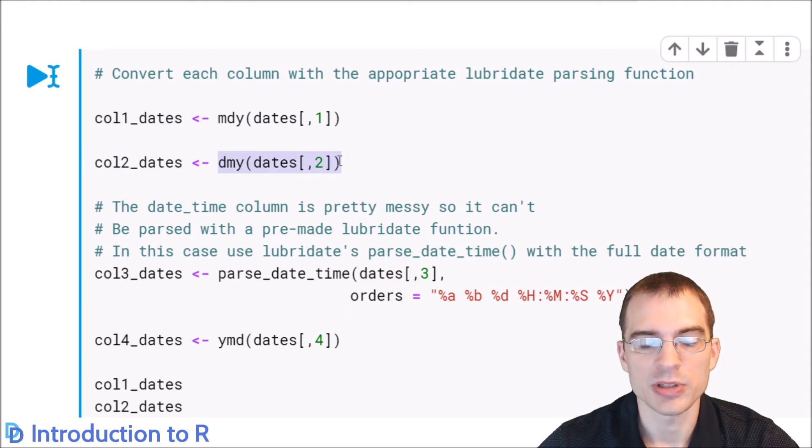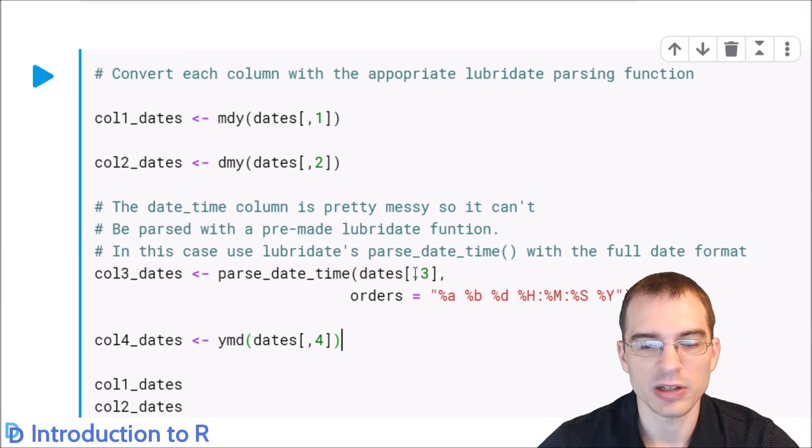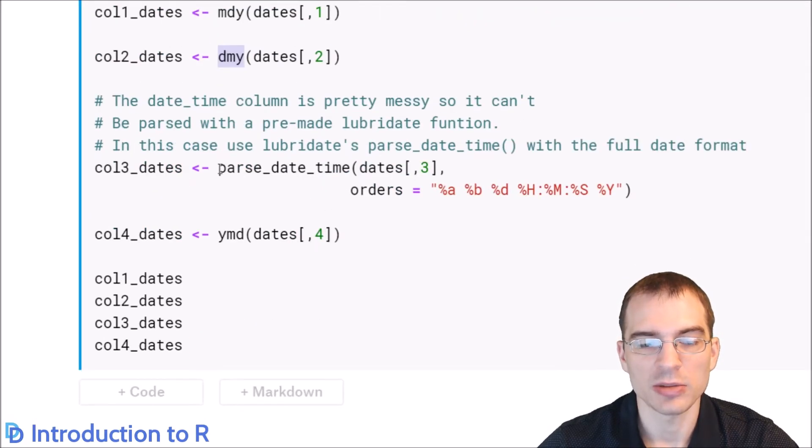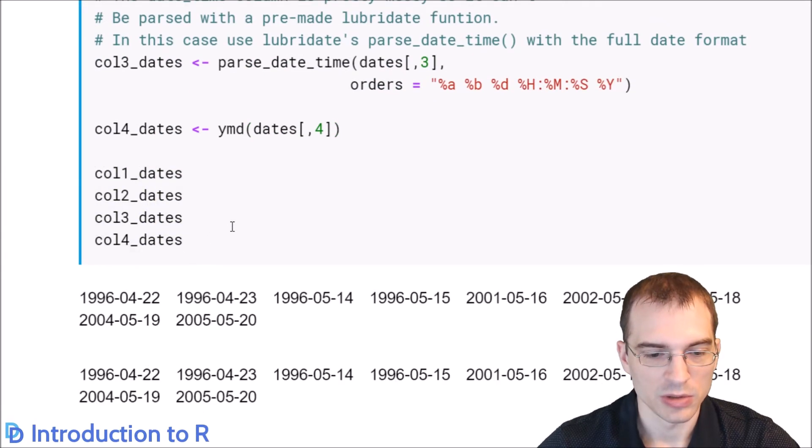For those first two columns in our data set, we can just use these built-in functions to do that conversion. Similarly, for the last column, we can call ymd to convert those that were in year, month, day format. Unfortunately, certain columns that have very complicated formats don't have a built-in function that will work for them. That third column that had a longer full date time format, we'll need to give a specific format string to convert, just like we did before. We can use the parse_date_time function in Lubridate. We pass in that third column and give the full date format to convert that one. Once we run this, all four columns will be converted into date time formats.